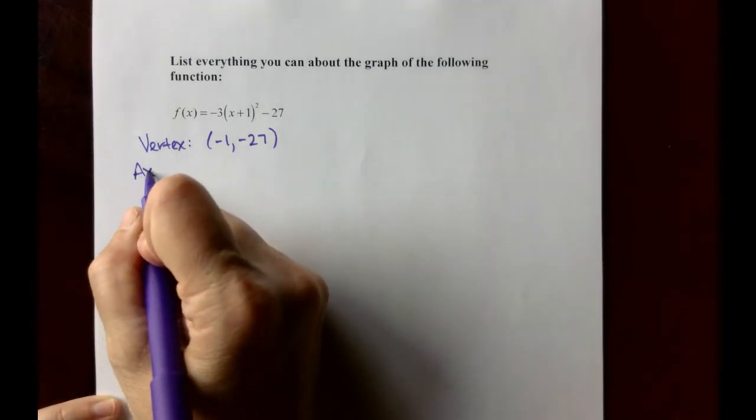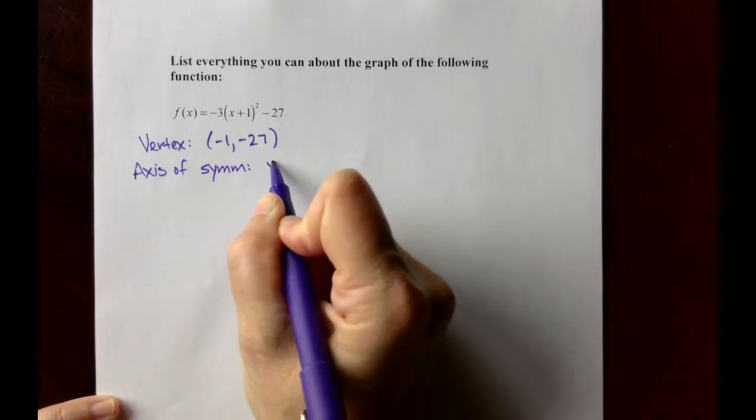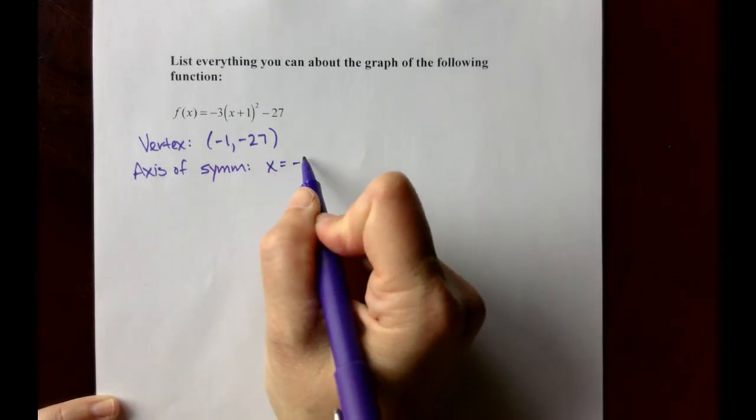And that means that the axis of symmetry for the parabola is x equals negative 1.